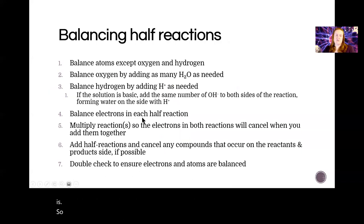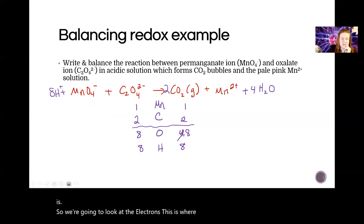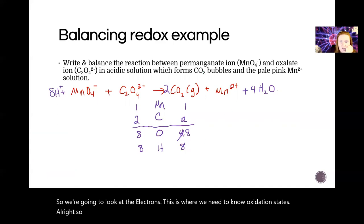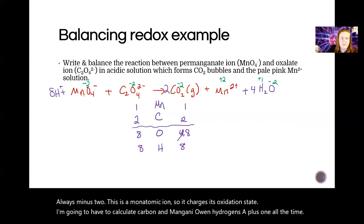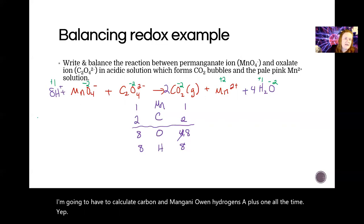So now we're going to look at the electrons. This is where we need to know oxidation states. All right, so we go through and none of these are elements. I don't see any elements. I do have rules for oxygen. Always minus two. This is a monatomic ion, so its charge is its oxidation state, and I'm going to have to calculate carbon and manganese. Oh, and hydrogen's a plus one all the time. Yep.